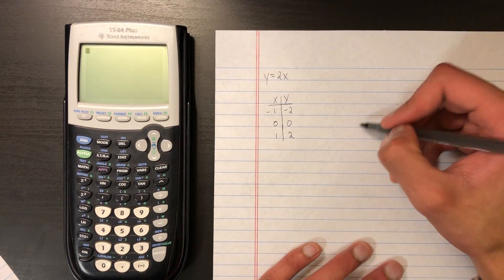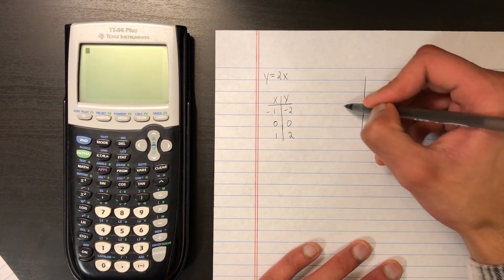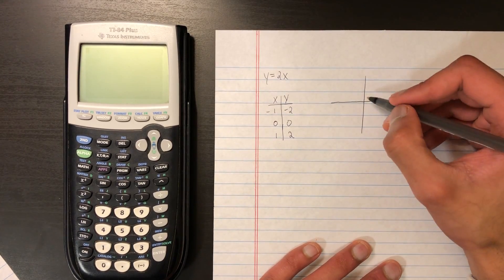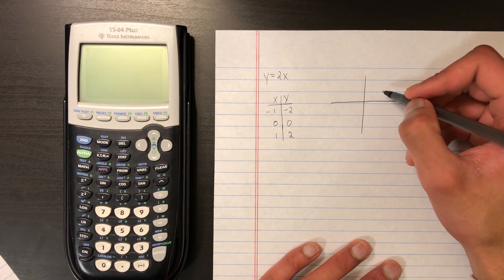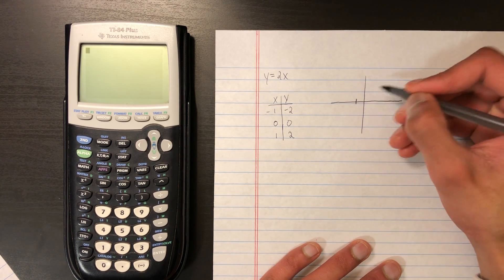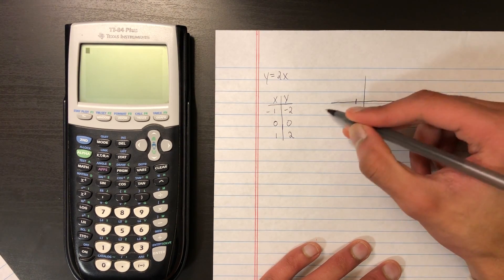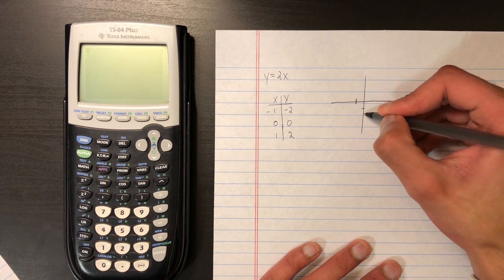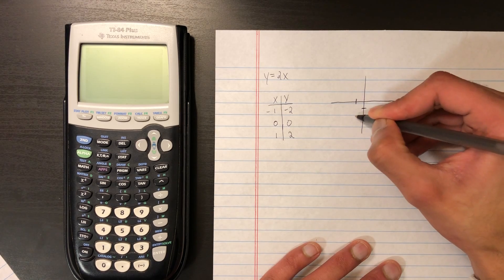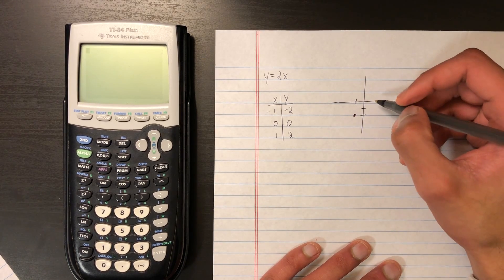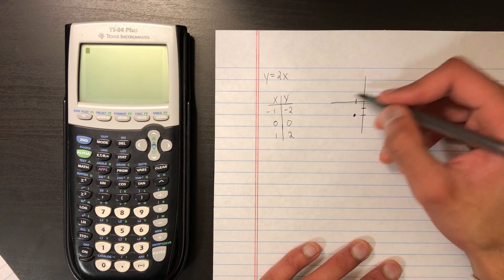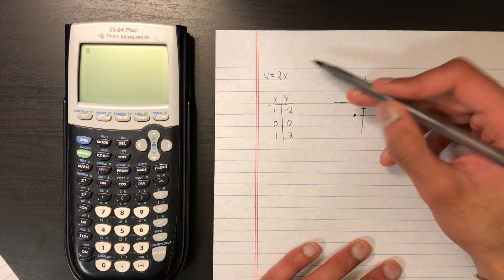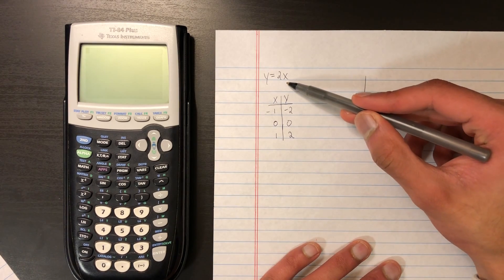And then we can create a simple graph of this. So our first value is negative 1, negative 2. So negative 1 is the x value, this is the x line, this is the y axis, and negative 2. That's our first point. The next point is 0, 0, which is right here at the origin. So our y-intercept for this equation is 0.